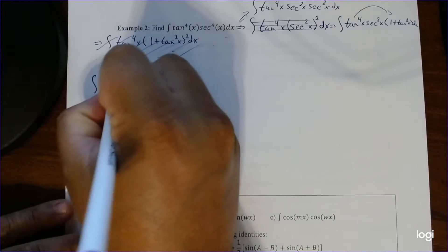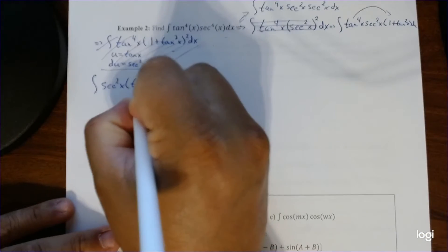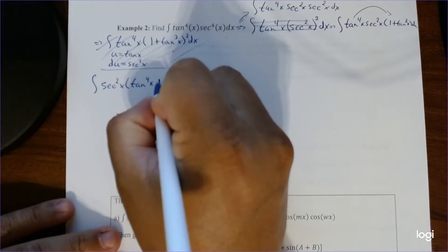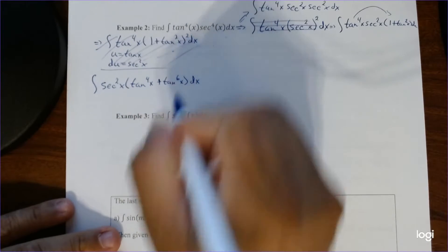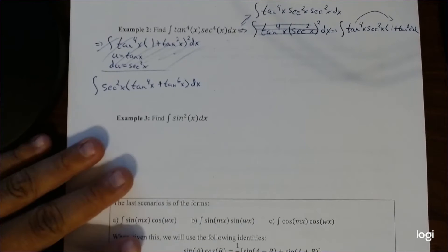So on the outside I'll have secant squared x, and on the inside I'll have tan to the 4th plus tan to the 6th. So now you guys can kind of tell what's going to happen, right? It makes it much easier to look at there.